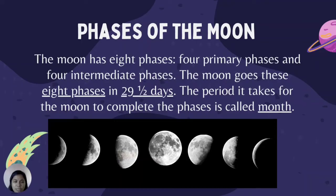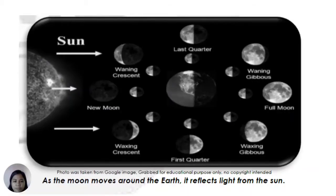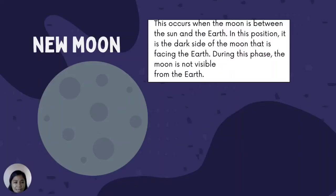The moon has 8 phases: 4 primary phases and 4 intermediate phases. The moon goes through these 8 phases in 29 and a half days. The period it takes for the moon to complete the phases is called a month. As the moon moves around the earth, it reflects the light from the sun. Now let us discuss them one by one.